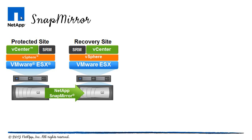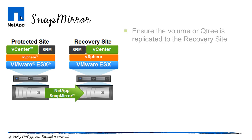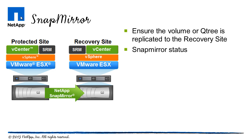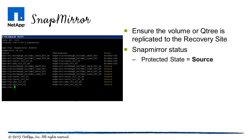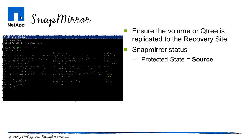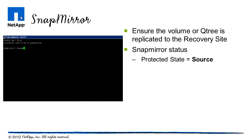In order for SRM to work correctly, data stores or queue trees must be replicated from the protected site to the recovery site. You can verify this by either using OnCommand System Manager or running the snapmirror status command from an SSH session. Verify from the protected controller that the state is equal to source, and on the recovery controller the state equals snapmirrored.